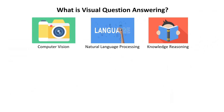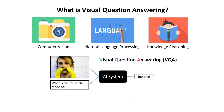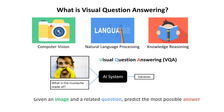With the great development of computer vision, natural language processing, and knowledge reasoning, visual question answering has become a popular research topic in recent years. Given an image and a related question, a VQA algorithm is designed to predict the most possible answer.